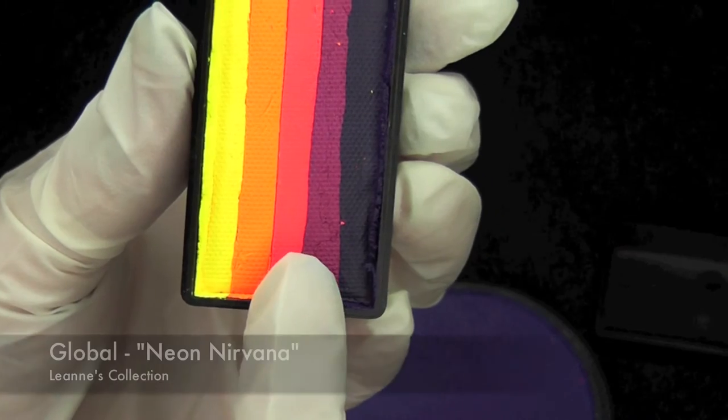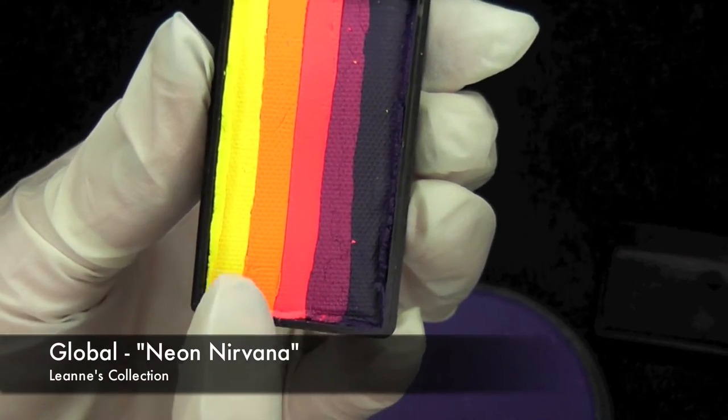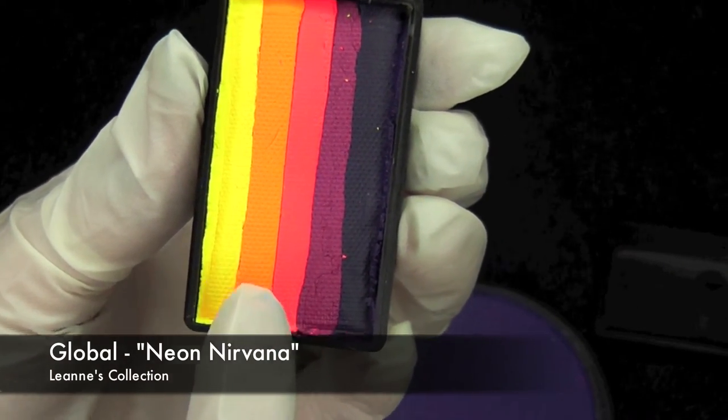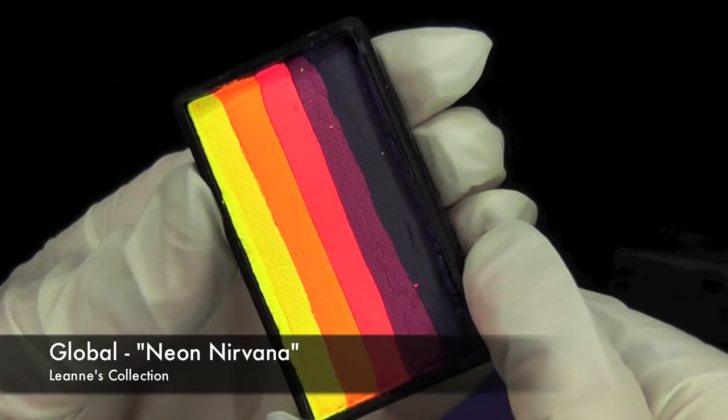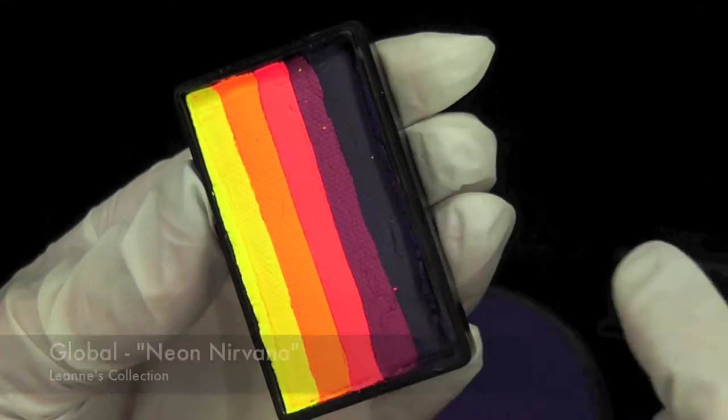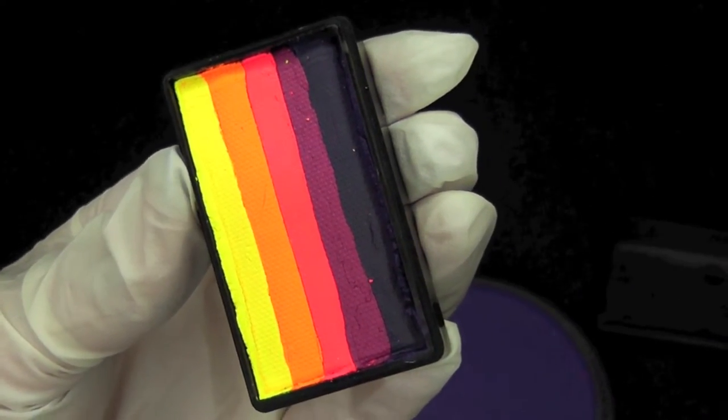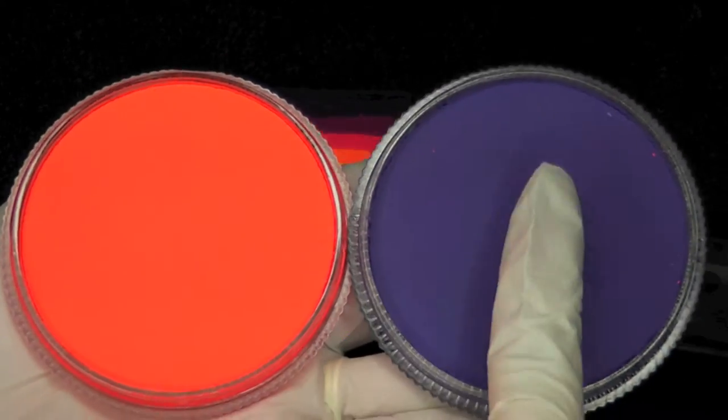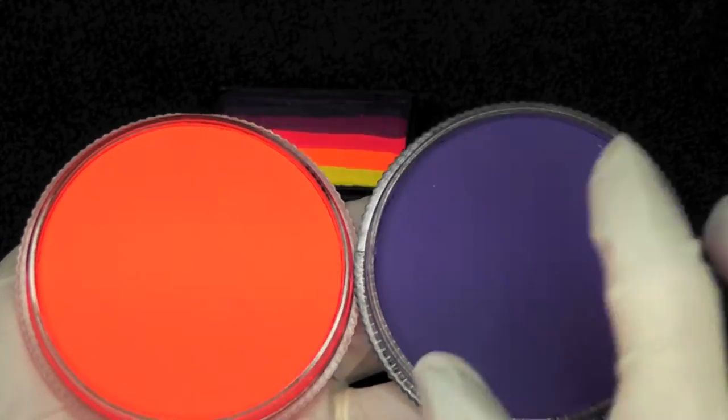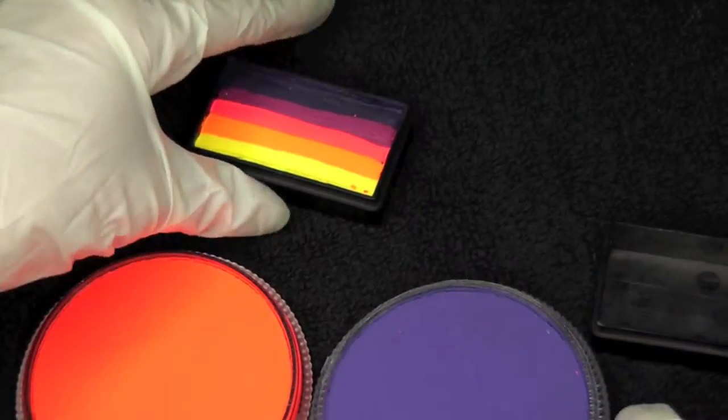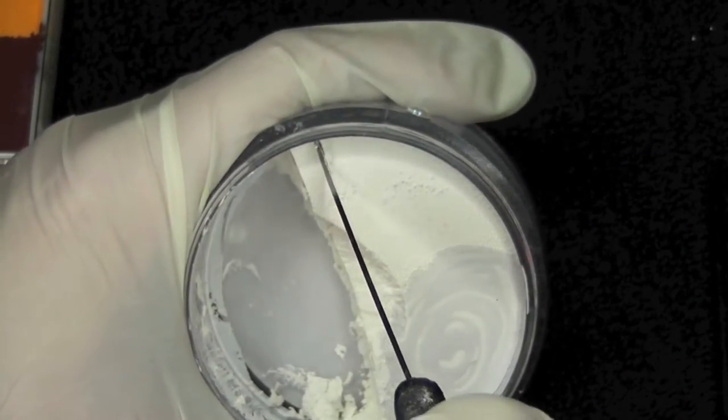So one thing you want to think about is what colors should go next to each other. In this neon Nirvana global one-stroke, they've separated out the colors that will blend well together and pair well together. You wouldn't want to put an orange next to a purple, for instance, because they would blend together to make a gross, yucky color. So instead, they've got that nice pink strip in there to make a nice color.